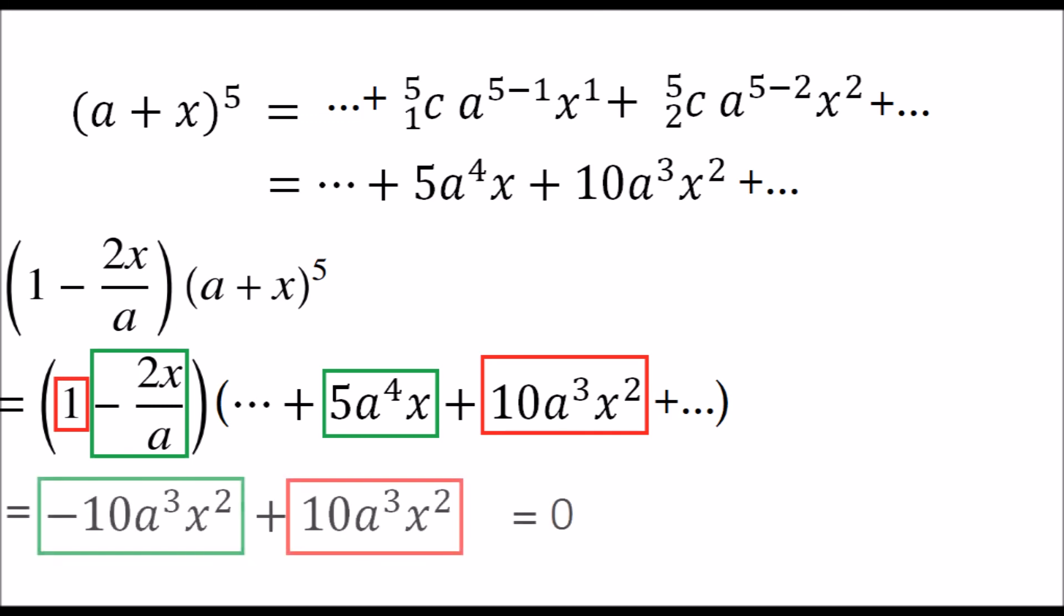They cancel each other out to give zero, and zero is the same as zero x squared. Zero into x squared is zero. So we have proved that the coefficient in the expansion is zero, the coefficient of x squared in the expansion is zero. I hope that helped. Thank you and see you again.